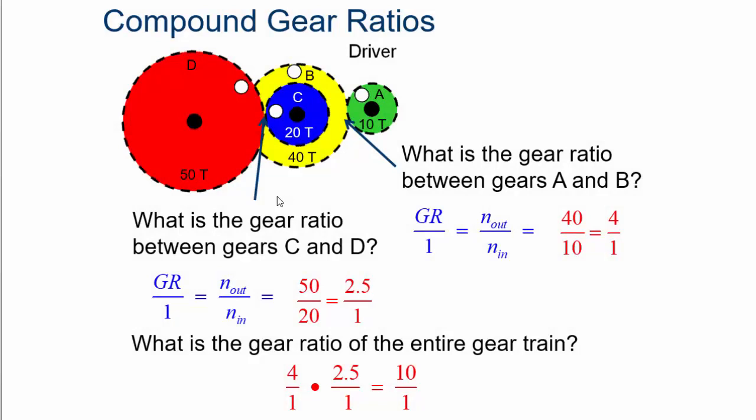And here's how you'd go about calculating that. You do the 50 to 20, the 50 and the 20, the 40 and the 10. So the 50 and the 20, you get 2.5 to 1. The 40 and the 10, you get 4 to 1. You multiply the two together and you end up with 10 to 1. So the overall gear ratio for that compound gear system is 10 to 1.